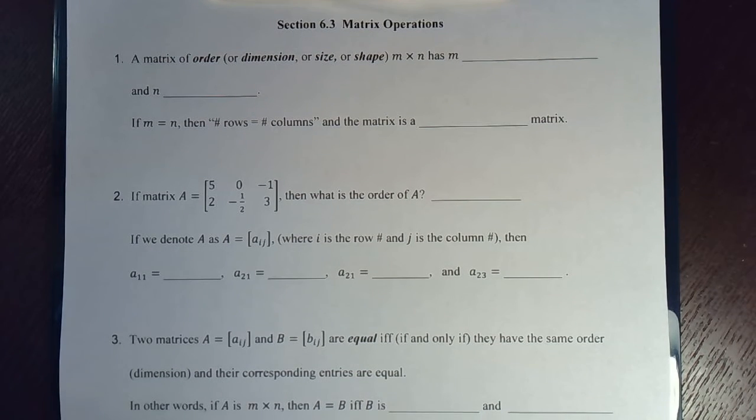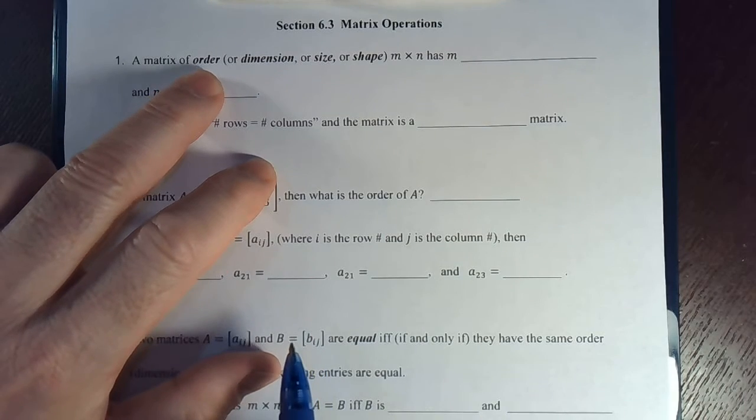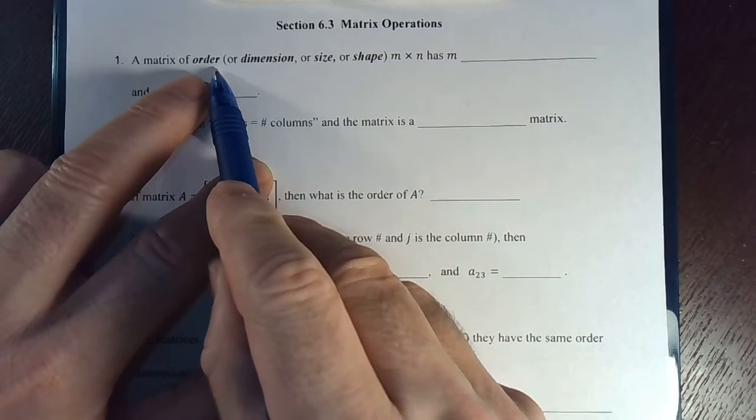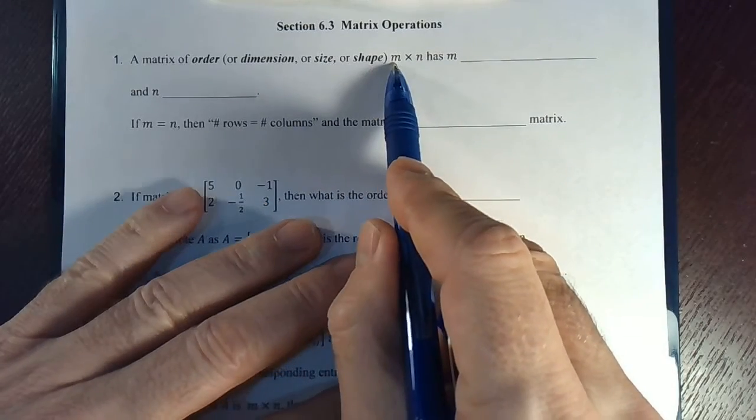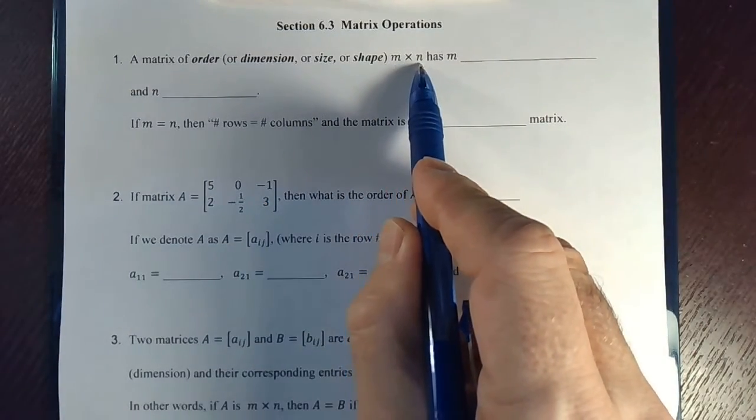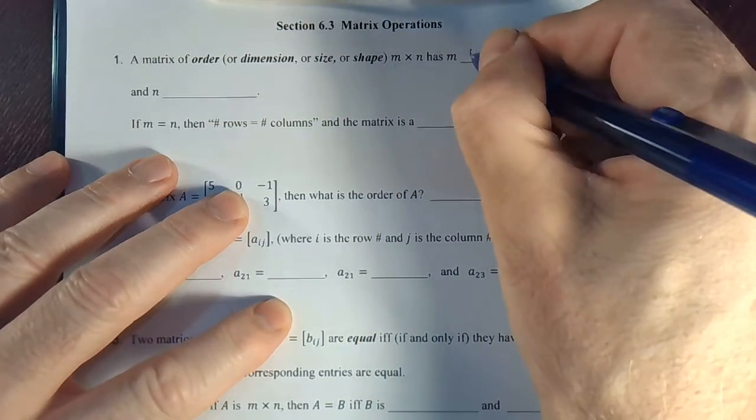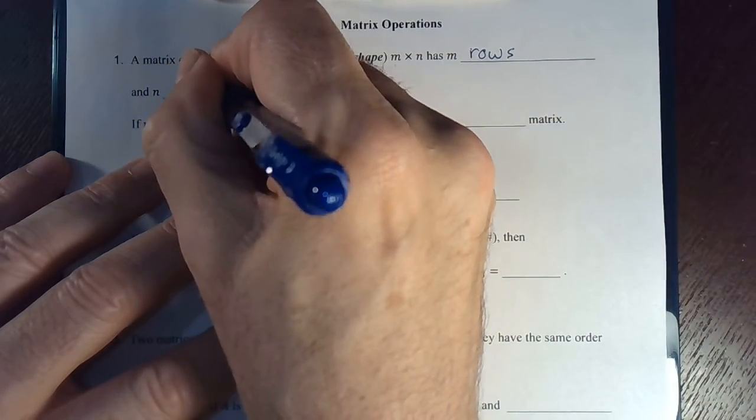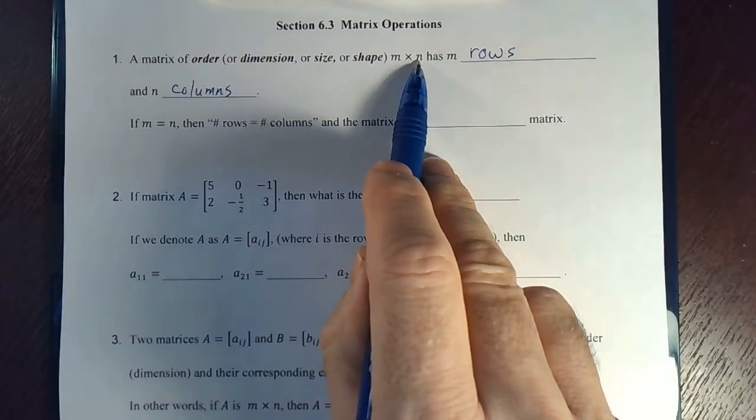Now first, let's define what some people just call the size of a matrix. The preferable term, at least in our textbook, is the order of the matrix. But all of these words I will use interchangeably: the order, the dimension, the size or shape. And it's referenced as a number M by N, like a 4x4 truck. So it has M rows and N columns. You need to remember what comes first. Rows comes first, so this would be M rows and N columns.